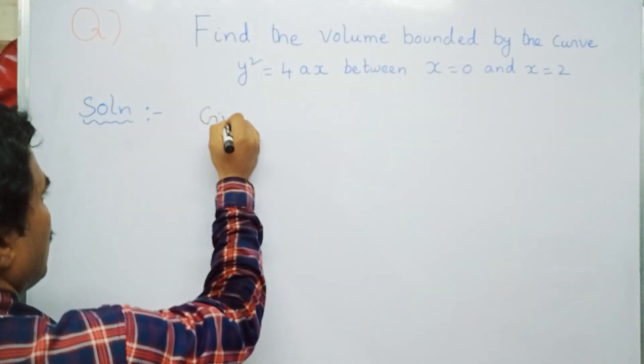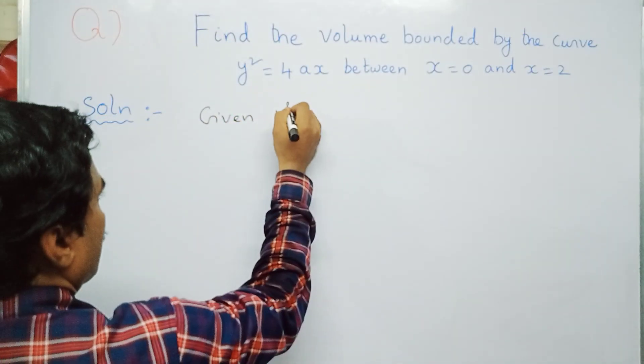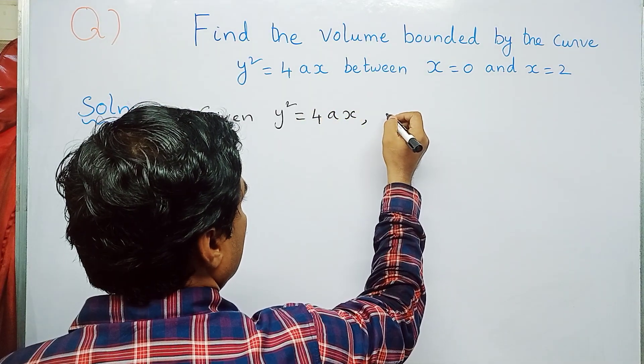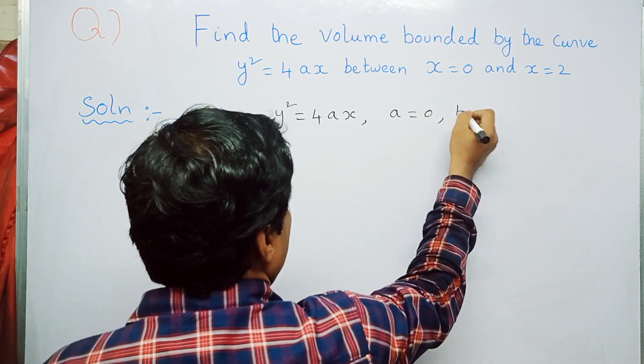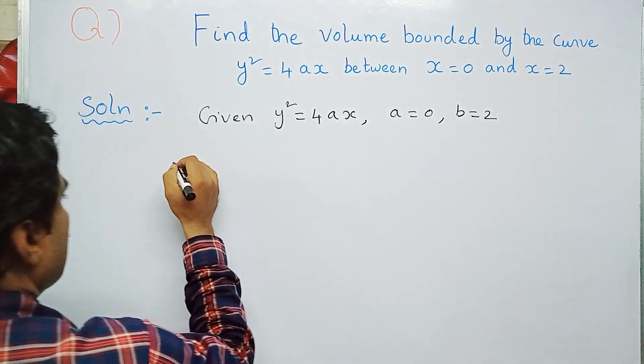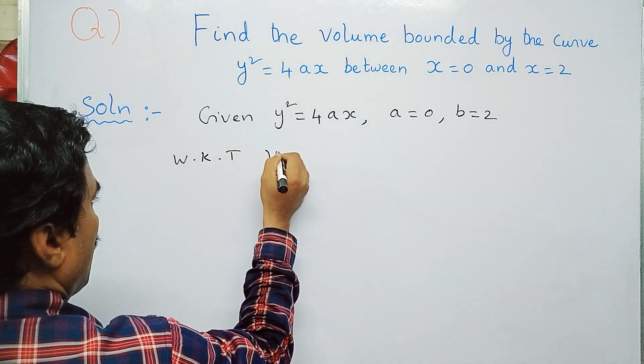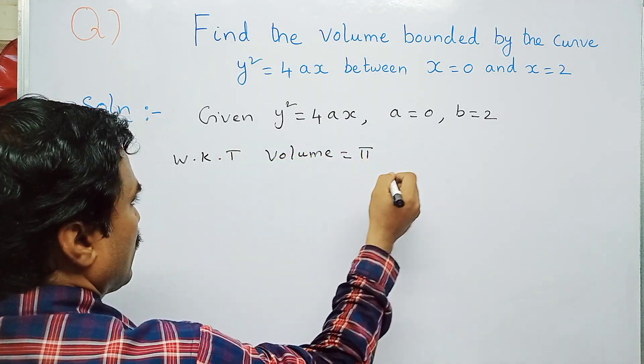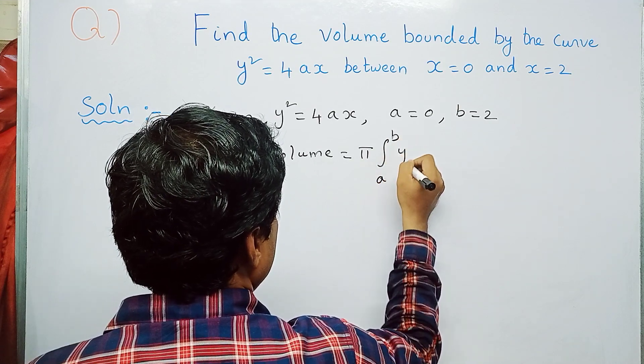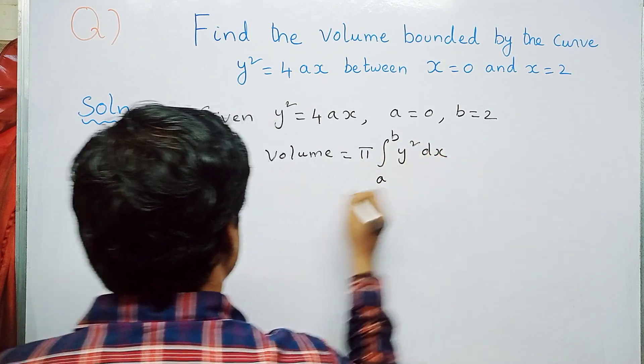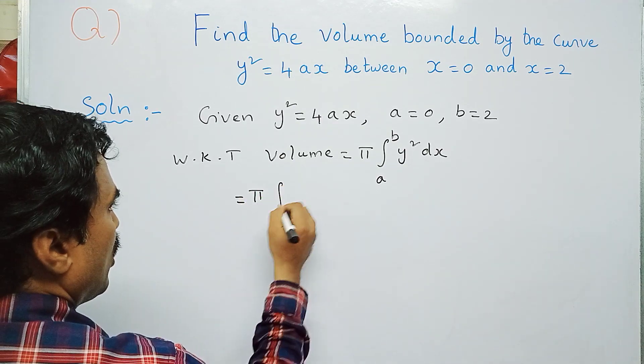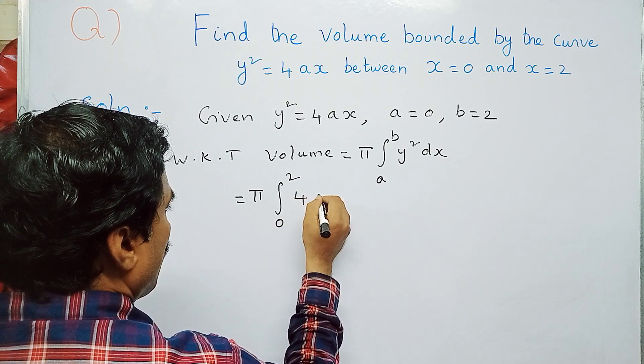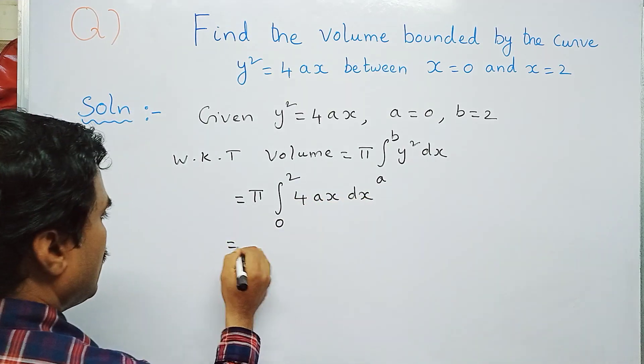Given: y² = 4ax, and the limits x = 0 and x = 2. That means a = 0, b = 2. Now we know that the volume formula is volume = π ∫[a to b] y² dx. So this is equal to π ∫[0 to 2] y² dx. Now the lower limit is 0, the upper limit is 2, and y² is 4ax dx.